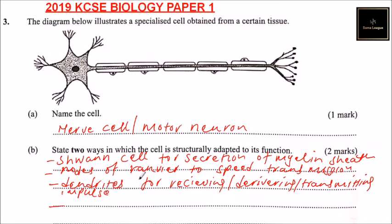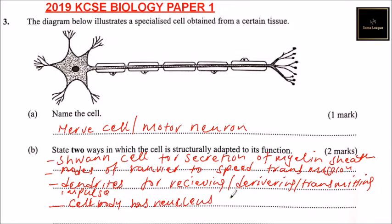The cell body has a nucleus which controls impulse transmission.